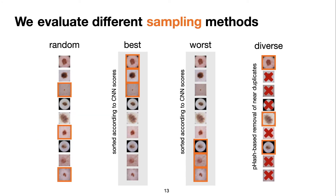We also evaluate different sampling methods. In the literature, the one most used is random, where you just randomly pick the samples you're going to use. This is also the one used when the GANs generate exactly the necessary amount of images. The next two methods, best and worst, are based on CNN scores. We use a separate CNN to produce scores for our synthetic images, and with that we can choose the ones with the highest scores, which we call best, and the ones with the lowest scores, which we call worst. The best ones present features that agree with those learned by the CNN, while the worst ones may rely on different features or even be the result of a mistake of the generative process. The last one is the diverse method, where we remove near-duplicates based on a perceptual hash, leaving us with images that are more visually different or more diversified in our synthetic dataset.